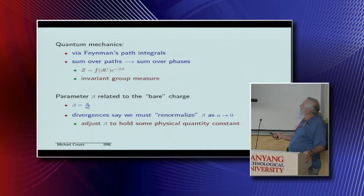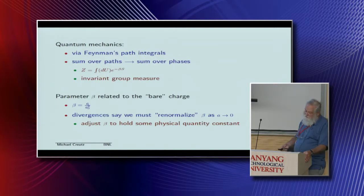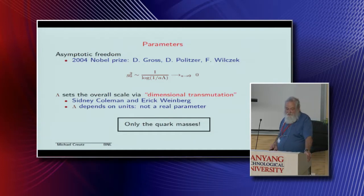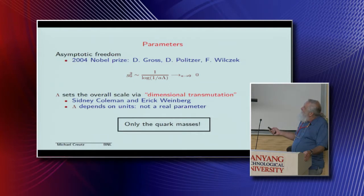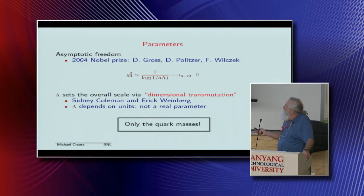Field theory has divergences, so we have to normalize the coupling constant as the lattice spacing goes to zero. The idea is to adjust the parameter β as you vary the lattice spacing to hold some physical quantity constant. Because of asymptotic freedom, we actually know what this coupling constant is supposed to do in the continuum limit — it's supposed to go to zero logarithmically as 'a' goes to zero. To go to zero logarithmically, you've got to introduce a scale. The scale parameter is called lambda QCD, and the replacement of the coupling constant with the scale is given the marvelous name by Weinberg of dimensional transmutation.